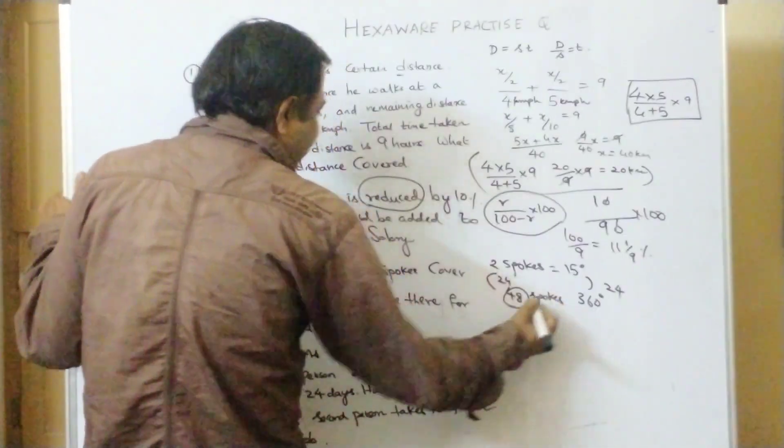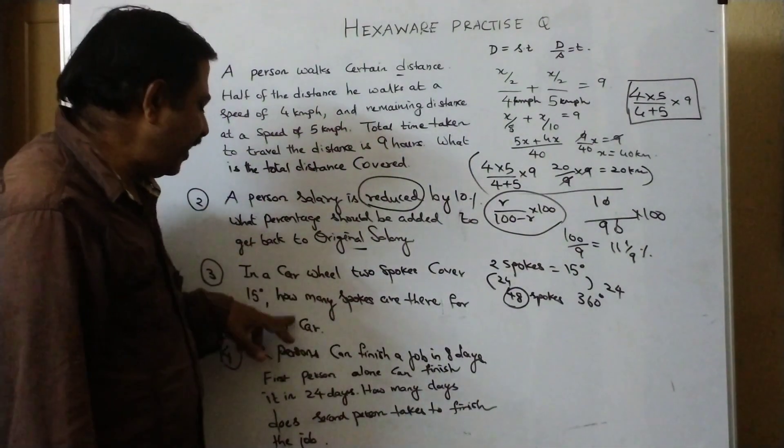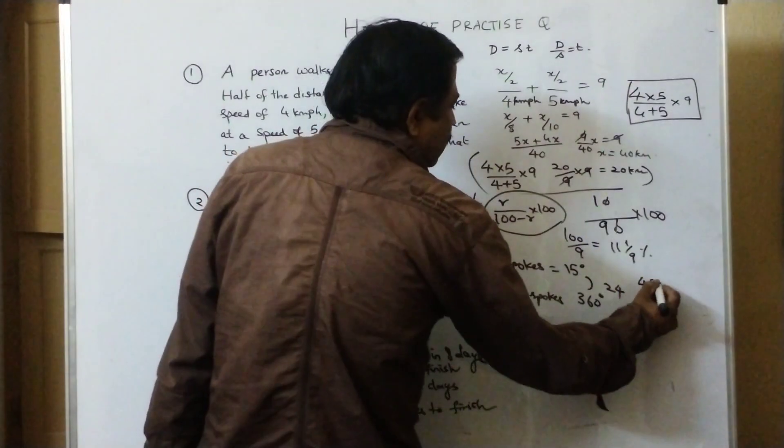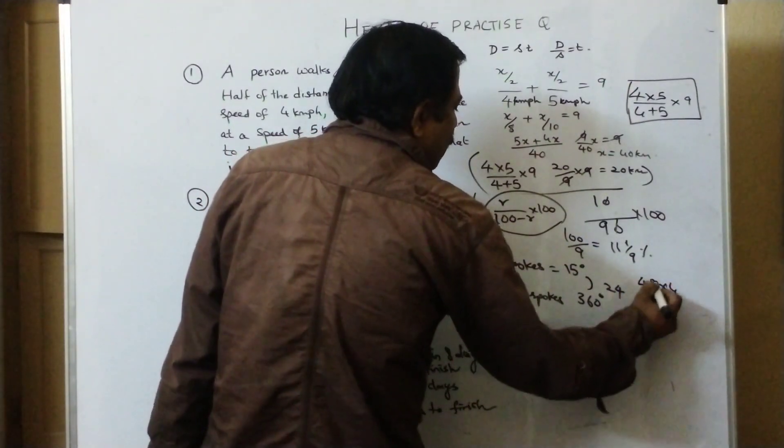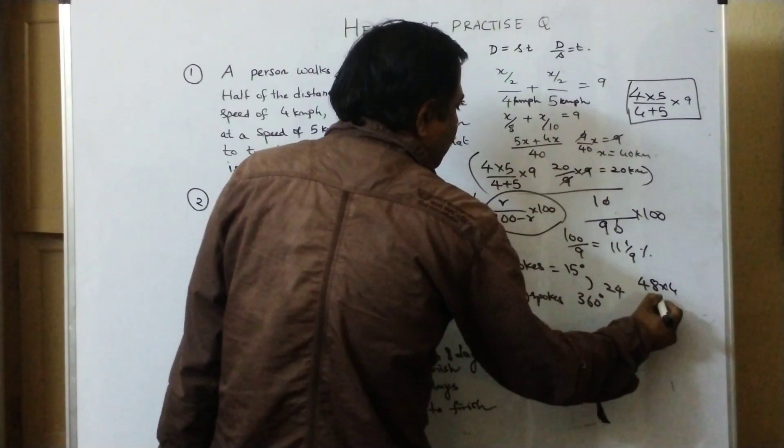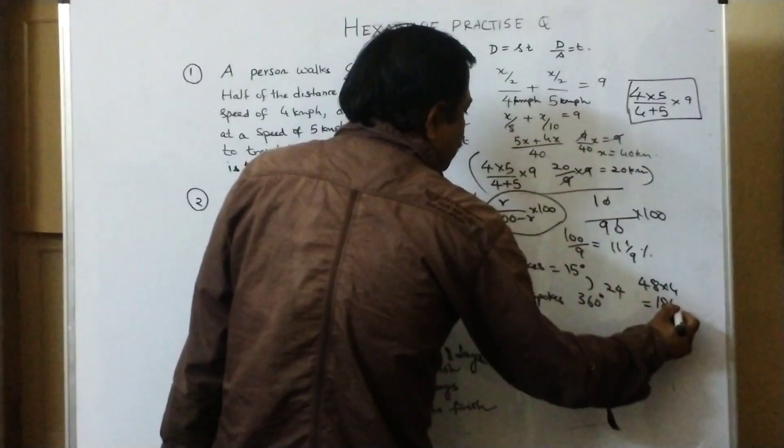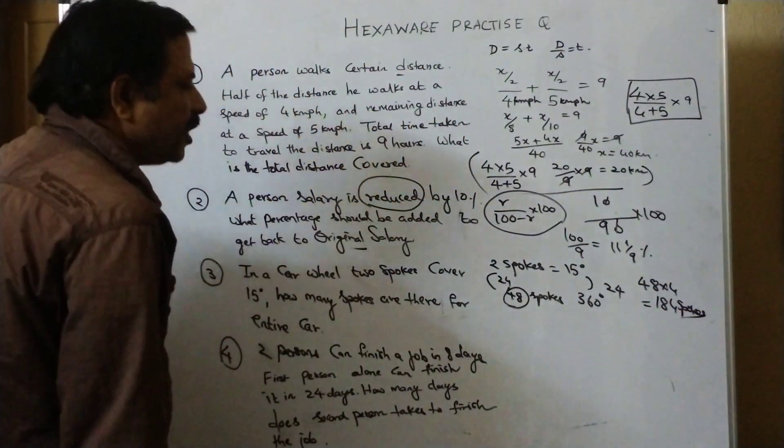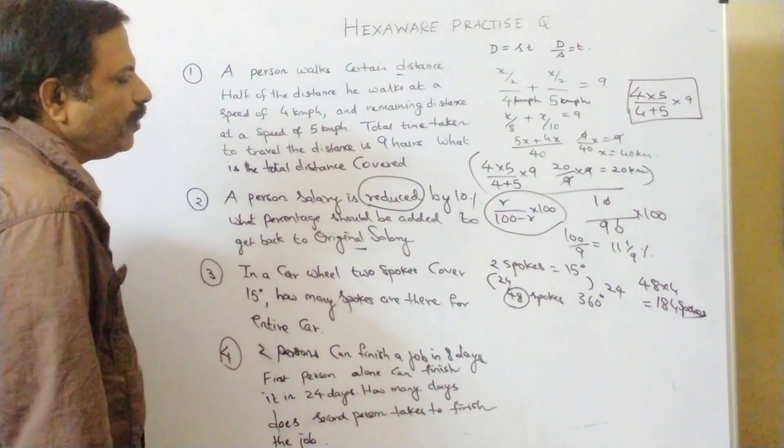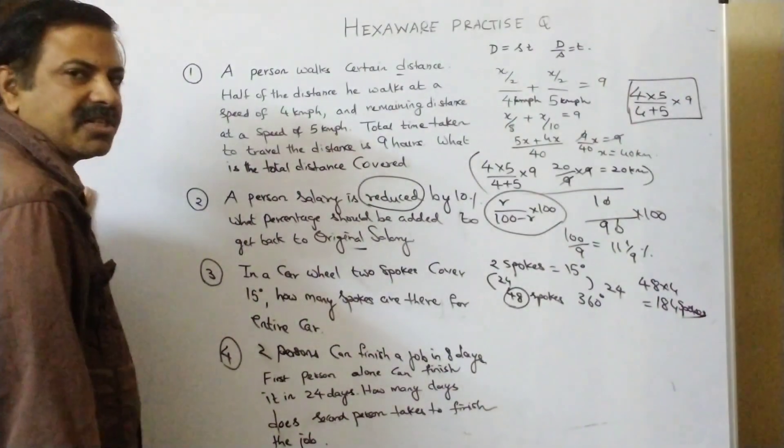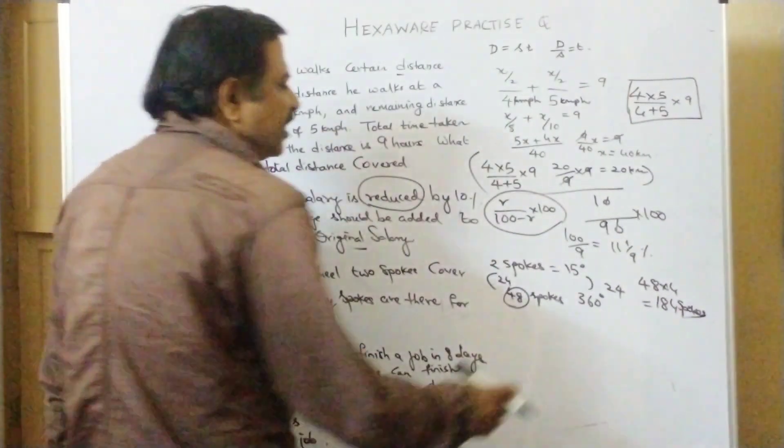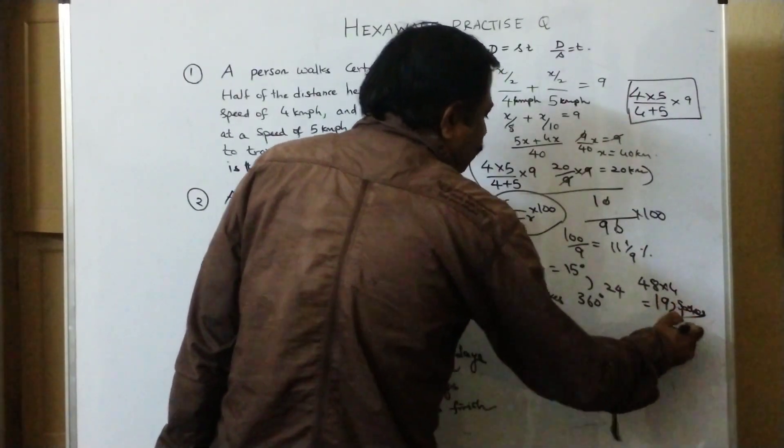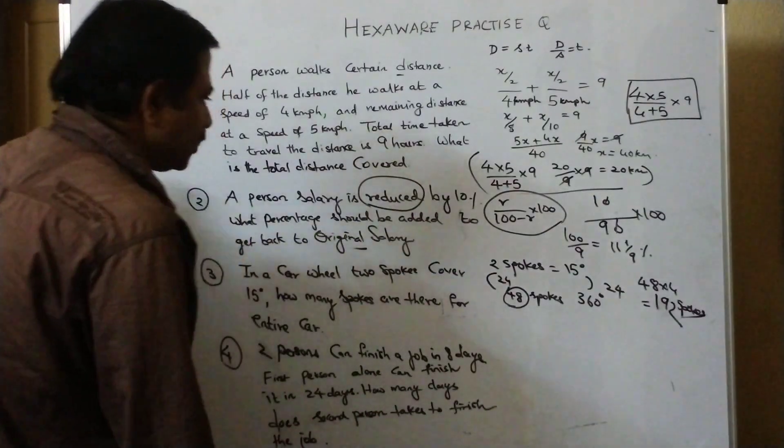48 spokes for one wheel. There are 4 wheels. How many spokes are there for entire car? So 48 into 4. 160 plus 32. 192 spokes.